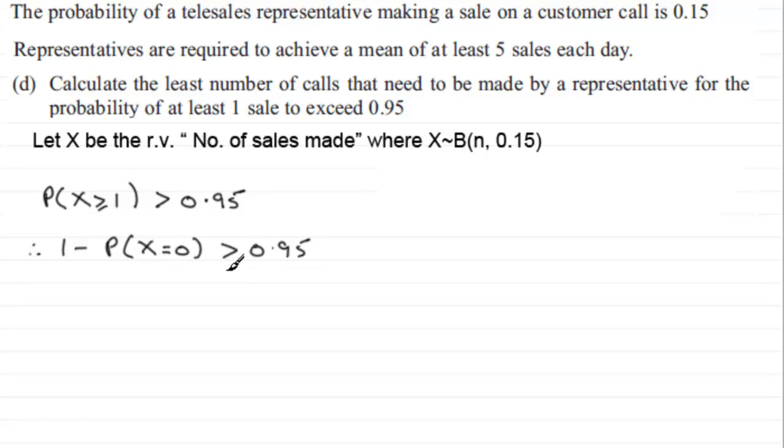So if we rearrange this inequality by adding the probability that X equals 0 to both sides and subtracting 0.95 from both sides, then you're going to end up with the probability that X equals 0 is going to be less than 1 minus 0.95, which is 0.05.